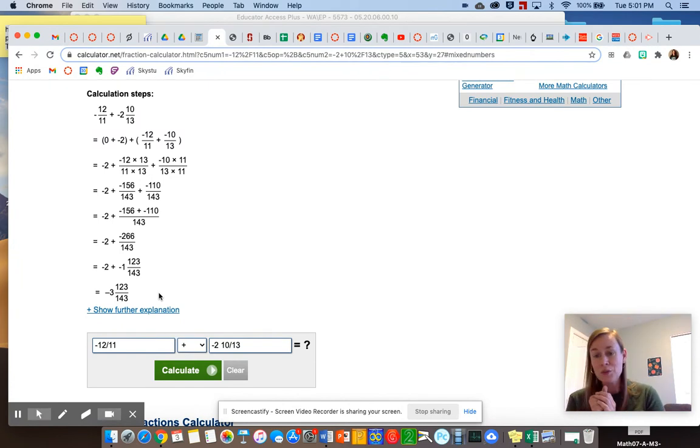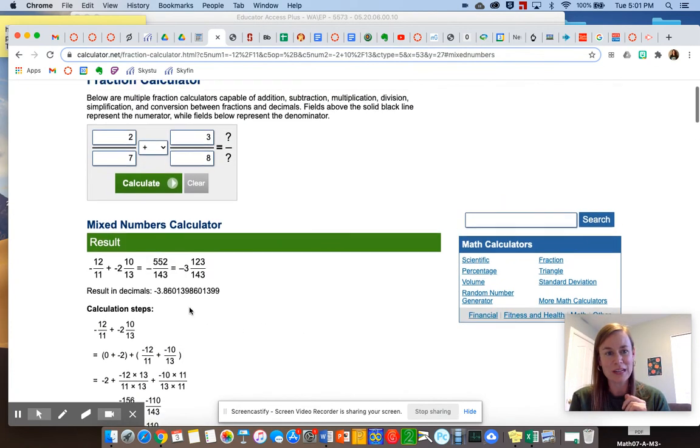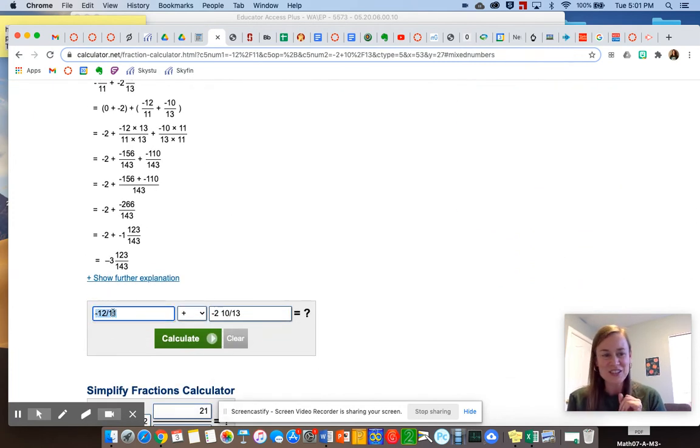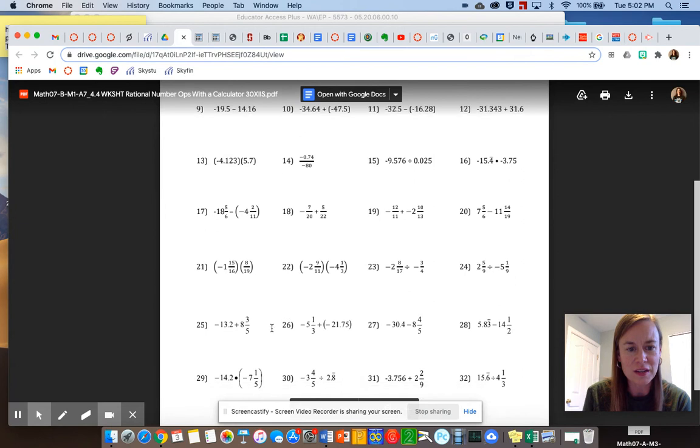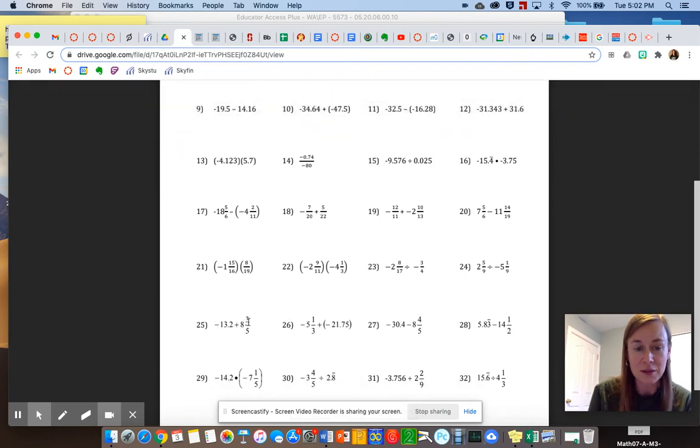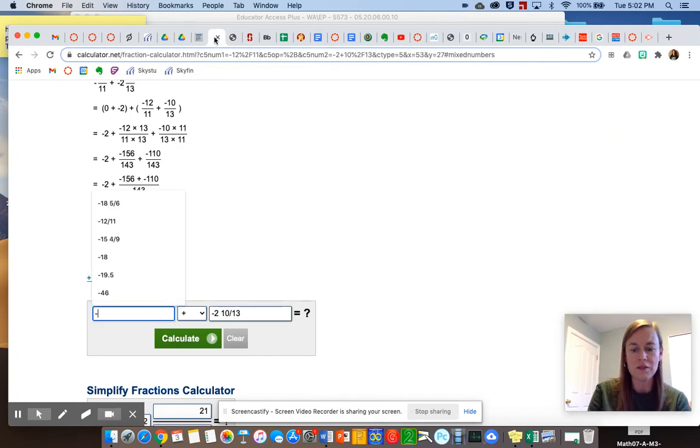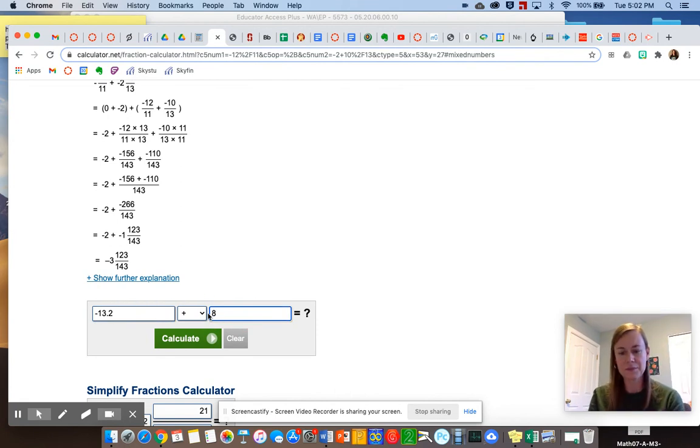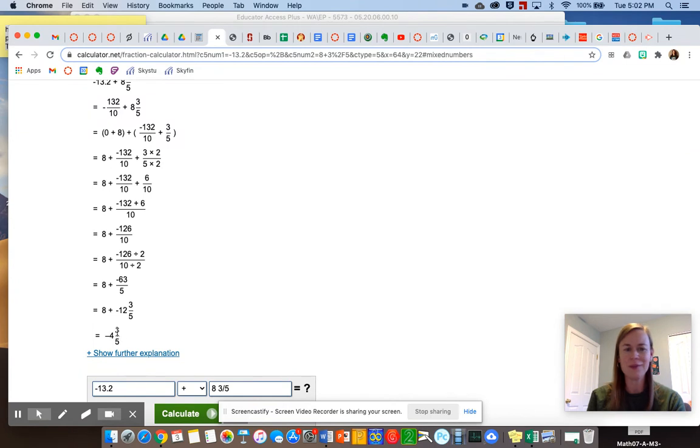So that was number 19. I would like to skip down and look at two more problems. We're going to look at 25, and we're going to look at 28. So let's do 25 first. So let's see if our mixed numbers calculator – I had a different way to do this, but I'm kind of excited about this mixed numbers calculator right now. So we're on number 25, okay? See how it's a decimal here and a mixed number there. Let's see if we can do this. So negative 13.2 plus eight and three-fifths. Calculate. And you come down here. Oh, look at that. Isn't that gorgeous? Negative four and three-fifths. It's so simple once the computer does all of that work for you. So that's how you do number 25.